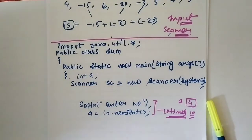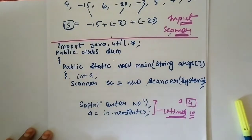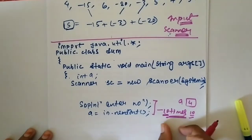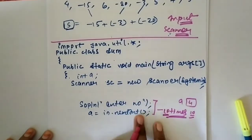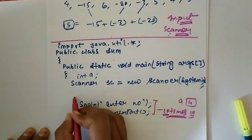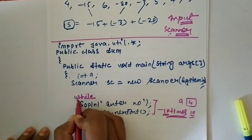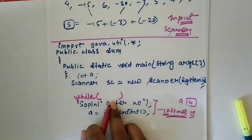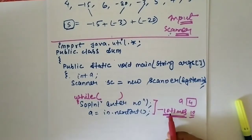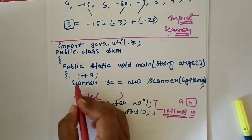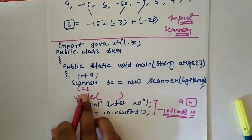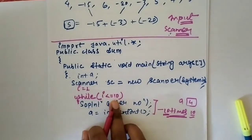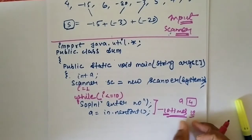We can use a while loop or for loop or do-while loop — any loop. We will use a while loop. First take a loop variable i = 1. The condition is i <= 10, which means this loop will run 10 times.